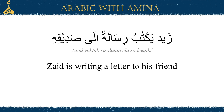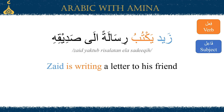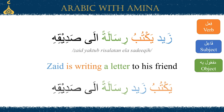Our next sentence is زيد يكتب رسالة إلى صديقه — 'Zaid is writing a letter to his friend.' The verb in this sentence is 'writing' or يكتب. The subject is زيد. What he is writing — the object or مفعول به — is a letter, رسالة. إلى صديقه, 'to his friend,' is a prepositional phrase or شبه جملة in Arabic. In this sentence we started with the subject, or the فاعل. We can also start with the verb and say يكتب زيد رسالة إلى صديقه.